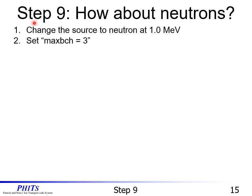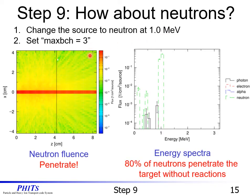Let's go on to Step 9: how about neutrons? Please change the source to neutrons at 1.0 MeV, and set max_batch equal to 3. From the calculated results of neutron fluence in track.eps and energy spectra in cross.eps, we can see that 80% of neutrons penetrate the target without reactions.